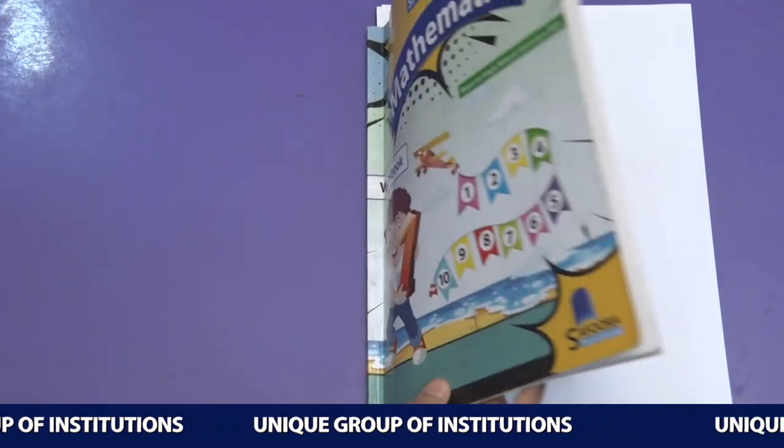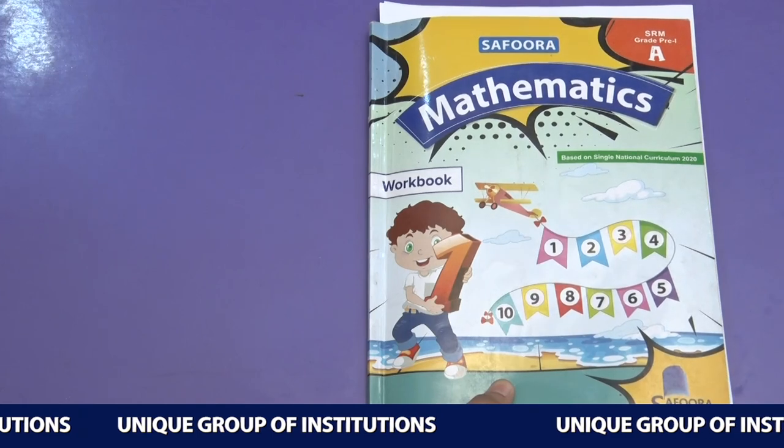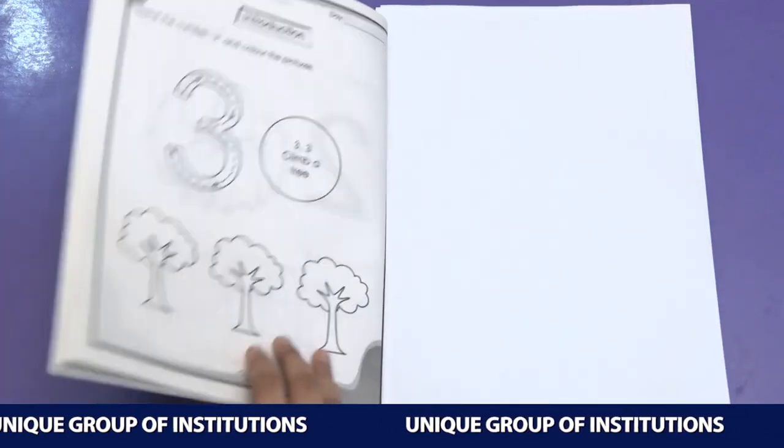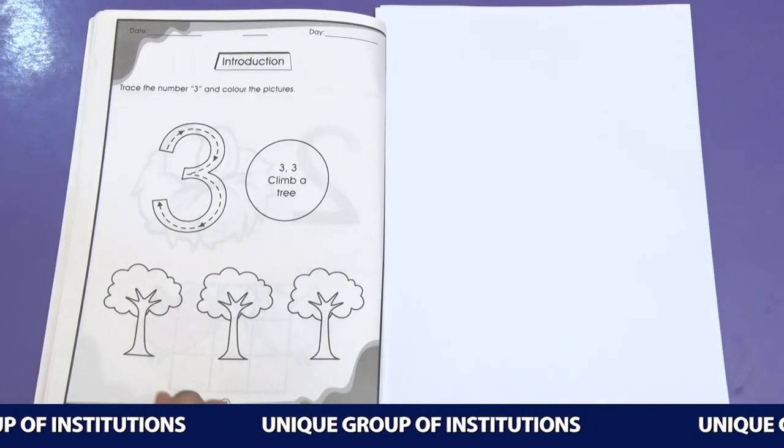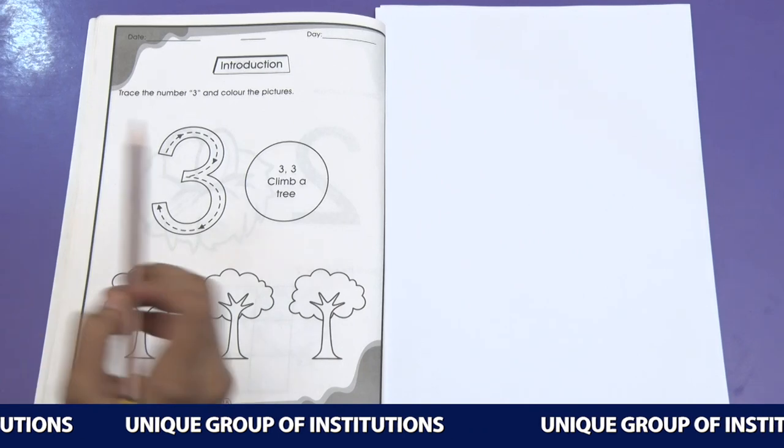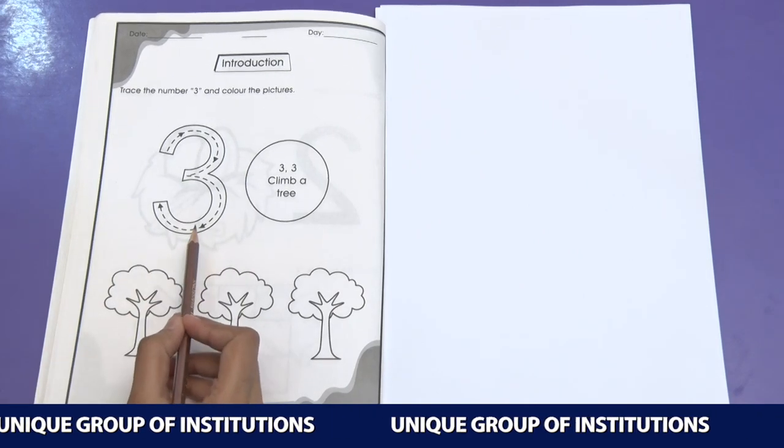Students, we are going to open our maths book, Mathematics forms a Poora publication, page number 15. First of all, we are going to learn how to trace the number 3.